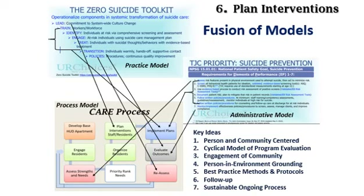The administrative model looks at the tools to assess the effect of change — various record-keeping kinds of protocols and evaluative protocols, and movement through the reassessment and evaluation. The key ideas here would be follow-up services — how well are those provided and how effective are they? The cyclical model of program evaluation represents the sustainability mode, going through the nine stops and then back around. Engagement of the community is the critical part of the success here, focusing on the person and environment from which to develop programming within the community. Best practice methods and protocols — in this case, DBT is the preferred model that will be implemented in Midway — and a sustainable ongoing process are the practice and administrative approaches that fit within the process model framework.